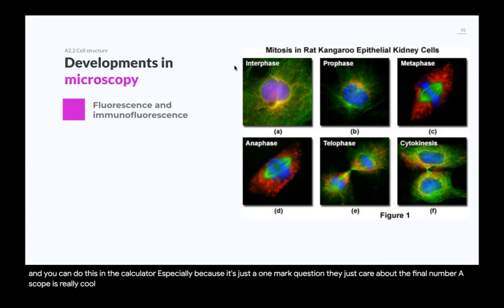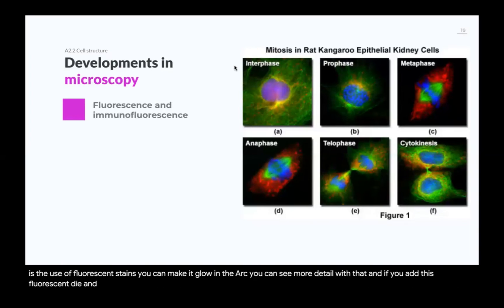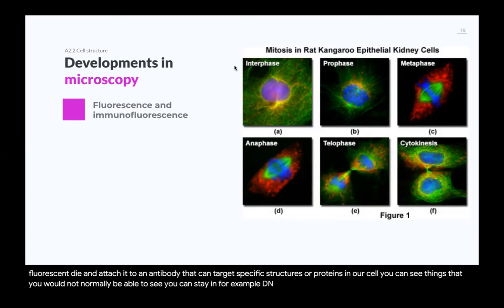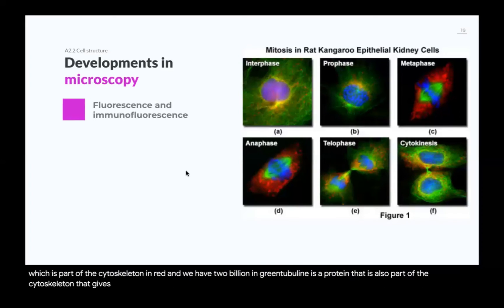This optical microscope is really cool and whatnot, but what else do we have? Well, we have fluorescence and immunofluorescence. Fluorescence is the use of fluorescent stains. You can make it glow in the dark. You can see more detail with that. And if you add this fluorescent dye and attach it to an antibody that can target specific structures or proteins in your cell, you can see things that you would not normally be able to see. You can stain, for example, DNA. In this image, we have DNA in blue. We have actin, which is part of the cytoskeleton in red. And we have tubulin in green. Tubulin is a protein that is also part of the cytoskeleton that gives structure to the cell. But during cell division, it is used to form the mitotic spindle.